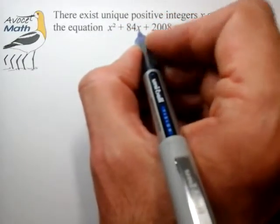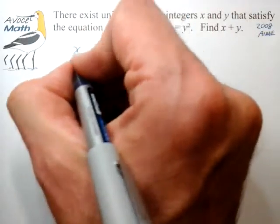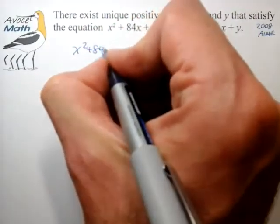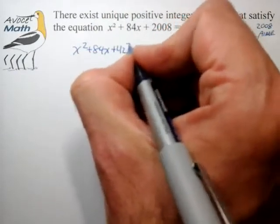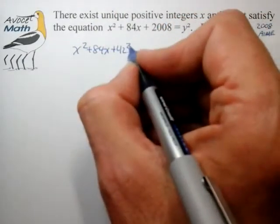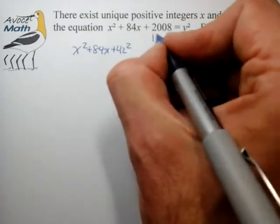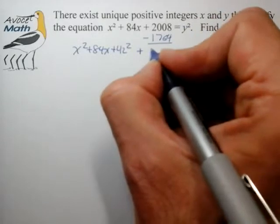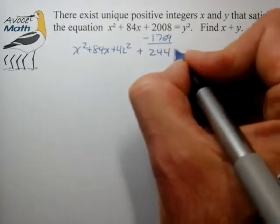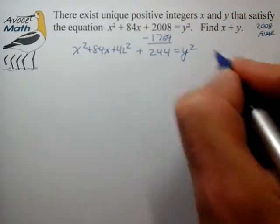We have x² + 84x. We can complete the square as x² + 84x plus 1 half of this squared. And now this 42 squared, we want to write that out as 1764 and subtract it from the 2008 for the balance of 244, and we have that equal to y².